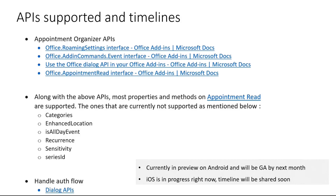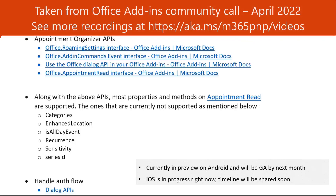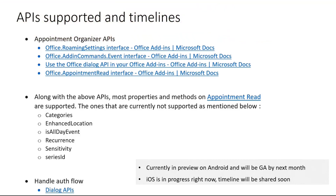In terms of the timeline, we are currently in preview on Android and will be GA by next month. The work on iOS is in progress and we'll share the timelines very soon on when iOS will be out as well. We're very excited to have this functionality as it was requested by a lot of our partners, and we're looking forward to having you try it out and share feedback on how this adds up to your use cases and if there are any specific APIs or support you need from our end. Very cool — thank you, Jatin. This is awesome to see because I know there's been a lot of interest in Outlook Mobile.